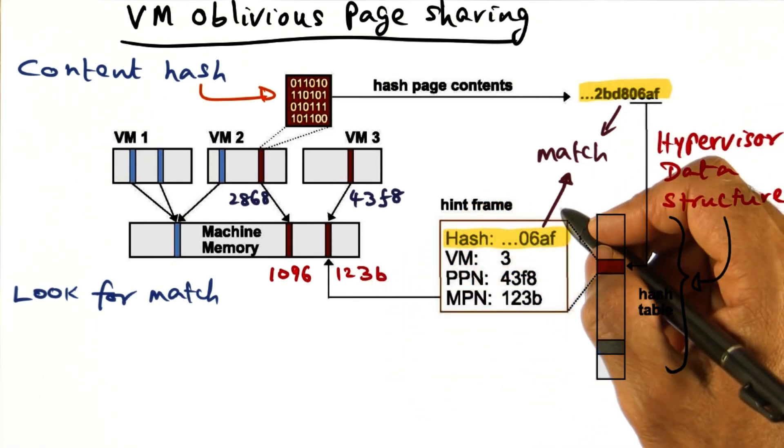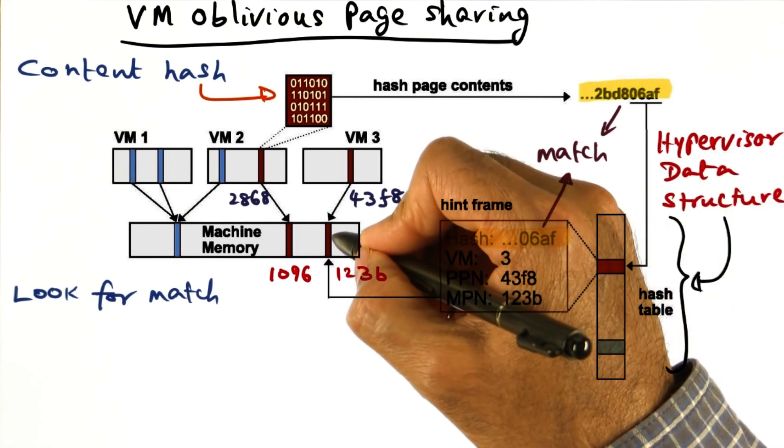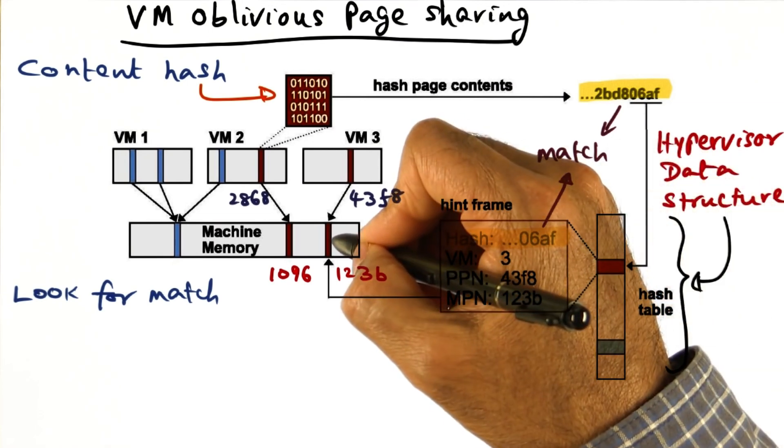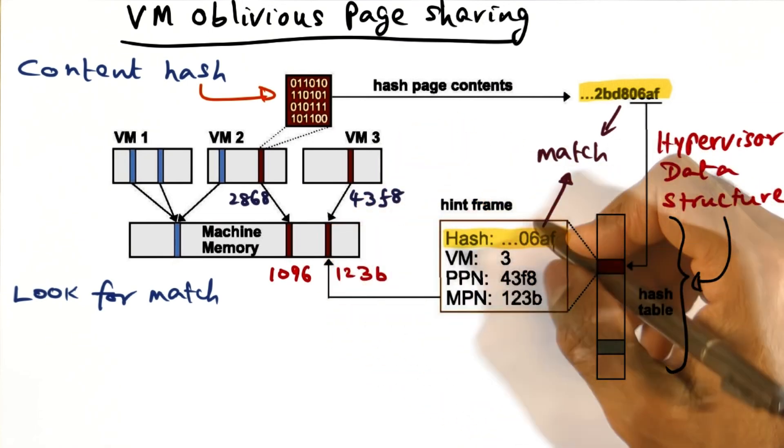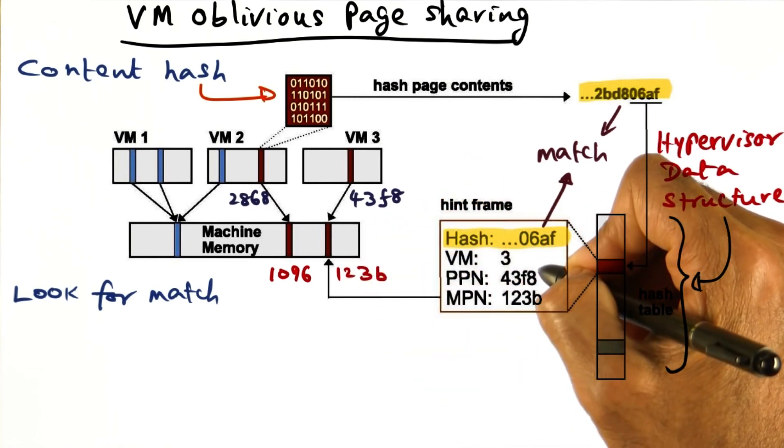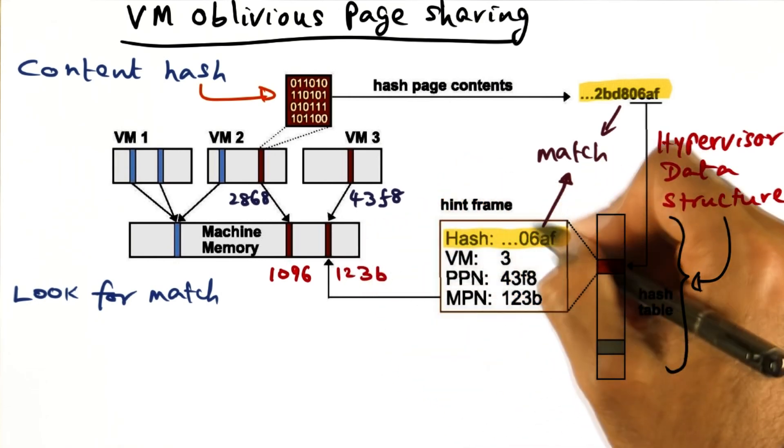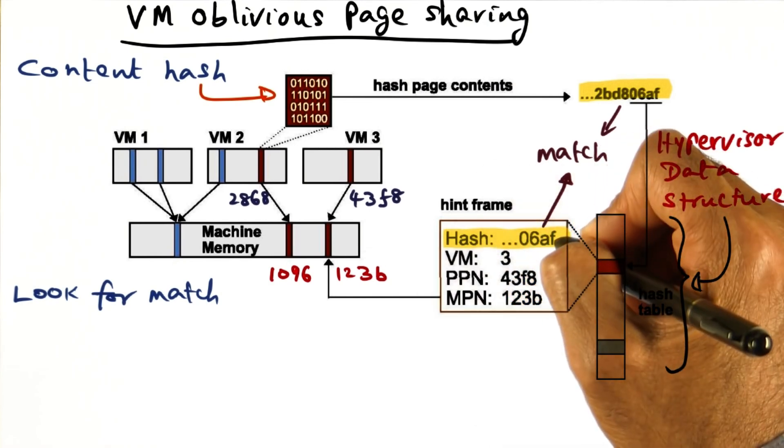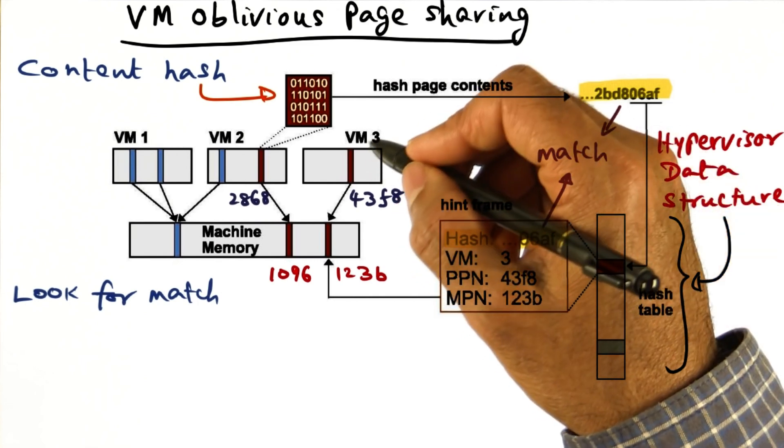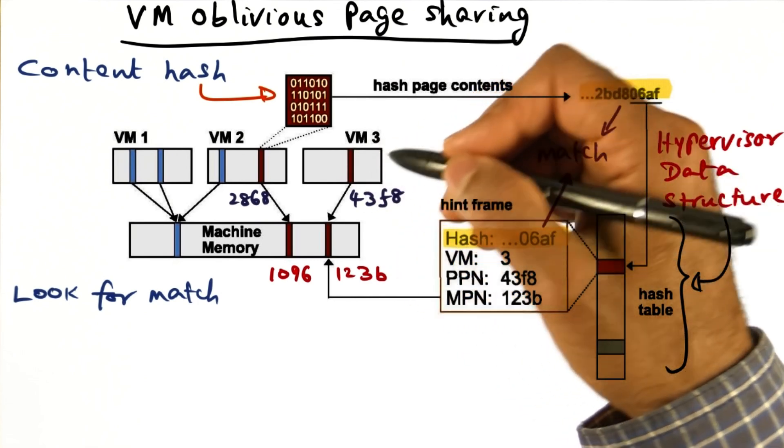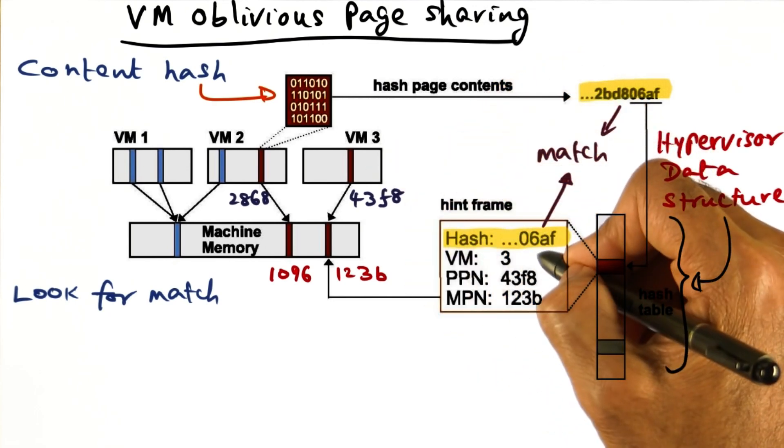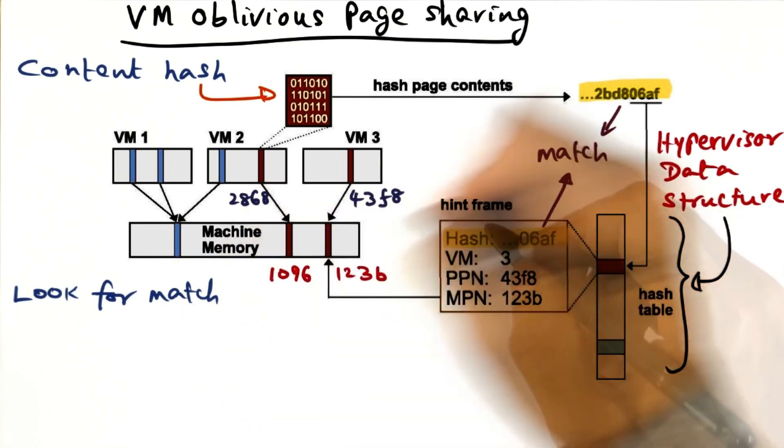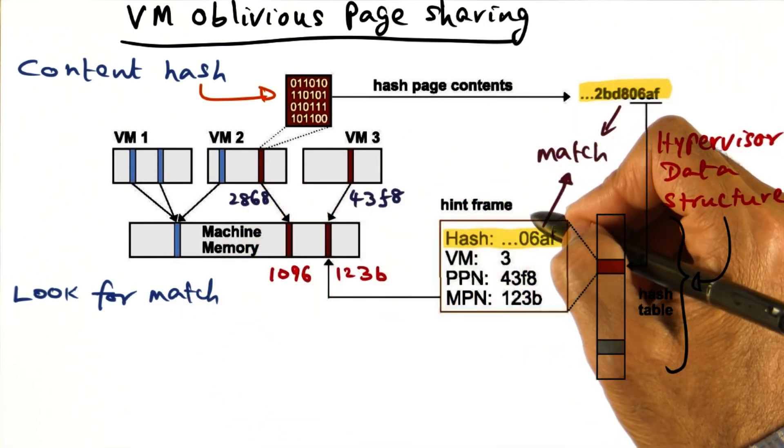So now we've got this match. Can we know that this page and this page are exactly the same? Well, we cannot. It's only a hint at this point that this page's content hash is the same as this, because this content hash for 123B was taken at some point of time. Now, VM3 could have been using this page actively and modified it. And if it has modified it, then this content hash that we have in this data structure may no longer be valid. And therefore, even though we got a match, it's only a hint, not an absolute.